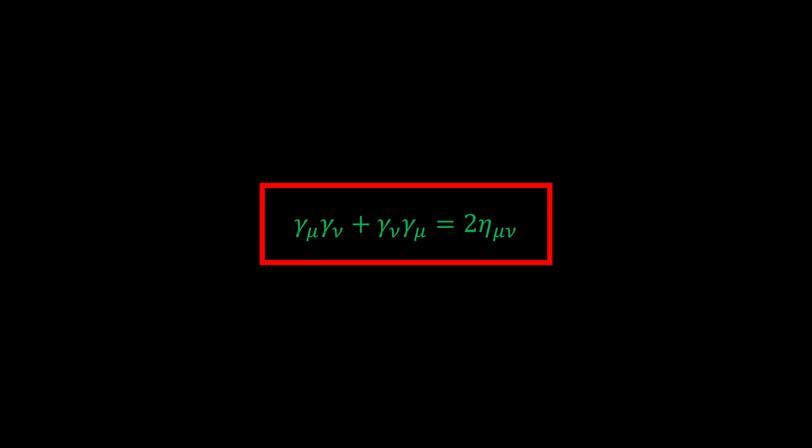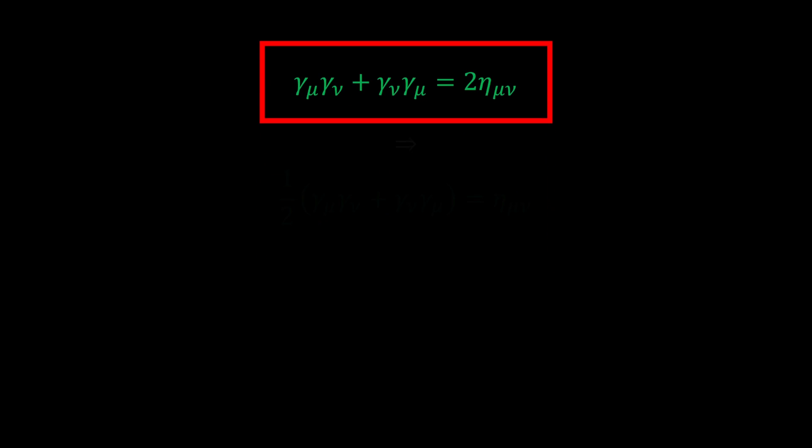The spacetime algebra is generated by this commutation relation, where eta is the plus-minus-minus-minus Minkowski metric. This can be an abstract way to look at it, so I prefer to rearrange the expression. The commutation relation simply states that the dot product between the unit vectors of the space must generate the Minkowski metric. In its most intuitive sense, this means that the basis vector associated with time squares to positive one, while the basis vectors associated with space square to negative one.